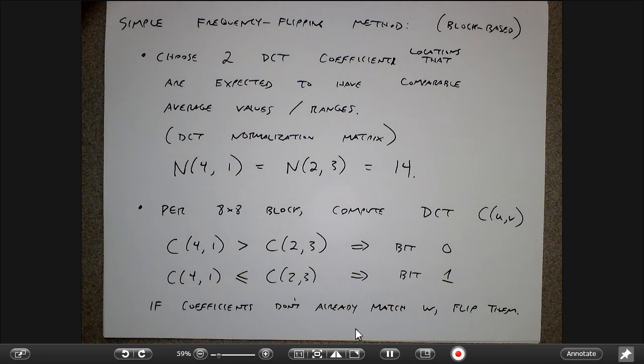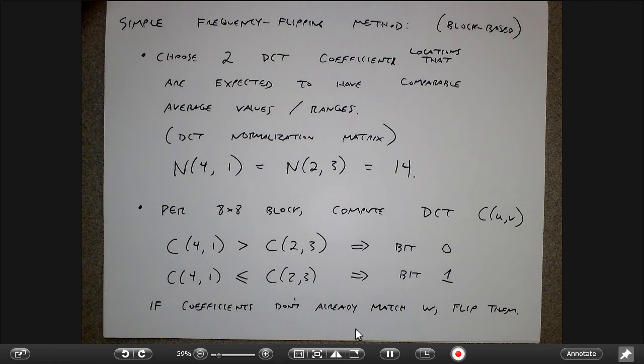This DCT flipping approach is not too bad, but it's easily defeated if the attacker knows the method — they just flip those two bit locations randomly until the watermark doesn't correlate with the original. Not very robust to a knowledgeable attacker.